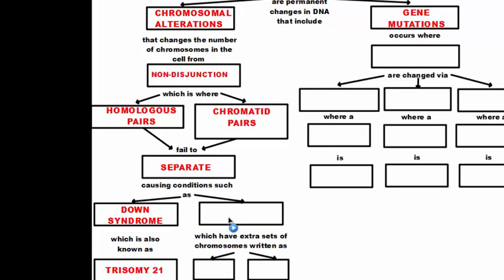We can also have a condition of polyploidy, which gives extra sets or half sets of chromosomes, written as 3n or 4n or greater, depending on how many sets are in the cell — versus the normal 2n for diploid and n for haploid cells.